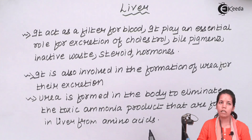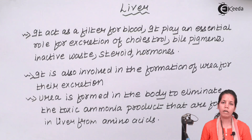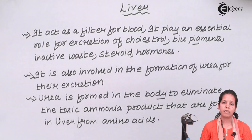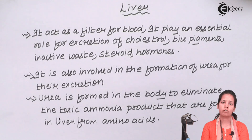Now, proteins — when chains of amino acids form long chains of proteins — the further breakdown or deamination process produces ammonia, and that removal is very crucial. That's done by the liver. I hope you all are now clear about what the functions of liver are. Thank you.